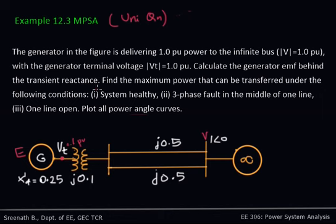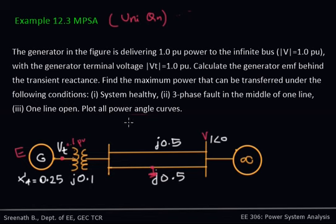You also have to find out the maximum power that can be transferred under different conditions: first, a healthy system without any disturbance; second, a three-phase fault in the middle of one line; and third, after the fault that line is opened. You have to analyze all three conditions, find the maximum power transferred, and plot the power angle curves for all three conditions.